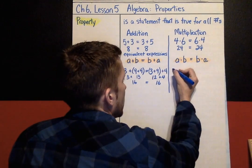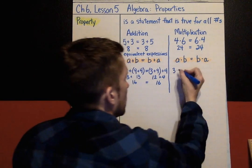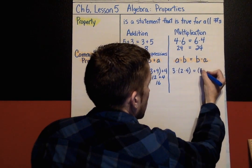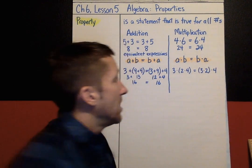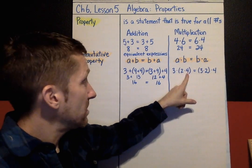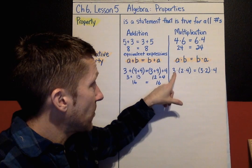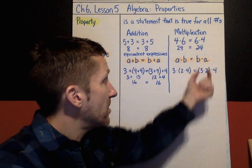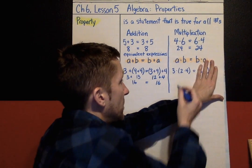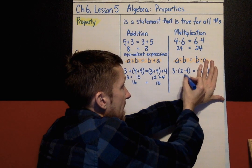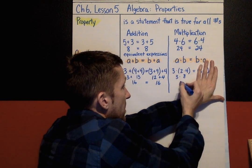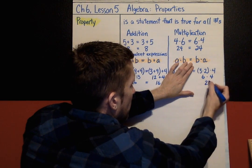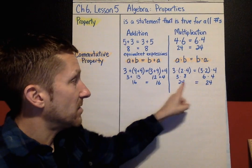The multiplication version: 3 times (2 times 4) is the same thing as (3 times 2) times 4. The numbers are identical on both sides and in the same order: 3, 2, 4. What's changed are the groupings. On the left, 2 and 4 are in parentheses; on the right, 3 and 2 are in parentheses. Solving the left: 2 times 4 is 8, times 3 is 24. On the right: 3 times 2 is 6, times 4 is 24. Again, equivalent expressions.